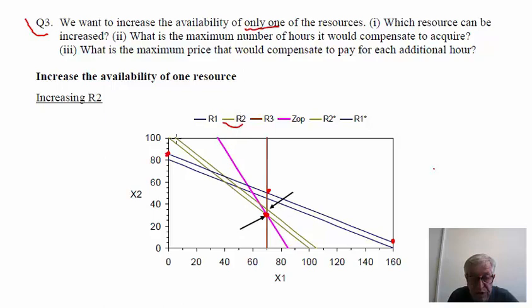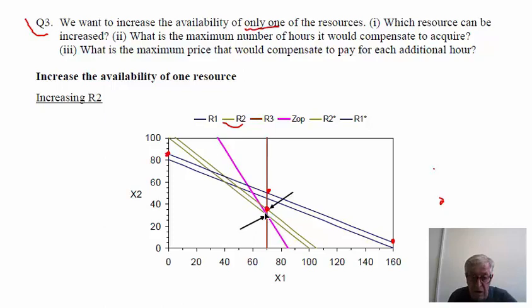The only useful option is to increase the availability of resource 2 — the assembly and finishing department, represented by the green line. If we increase this resource, the line translates upward, moving the optimal from the current intersection to a new intersection point. Since the inclinations of the lines don't change, the optimum remains defined by the same two lines but moves to a higher point, increasing Z.